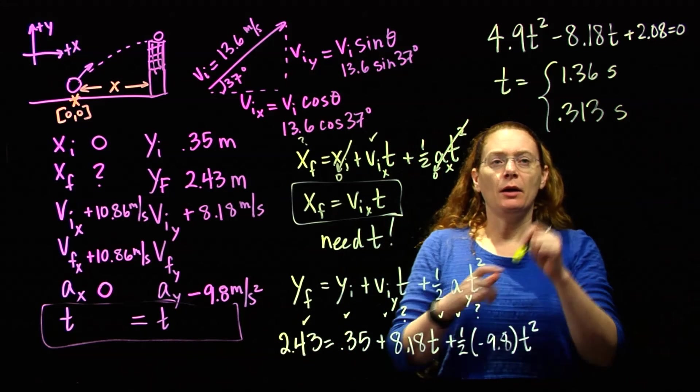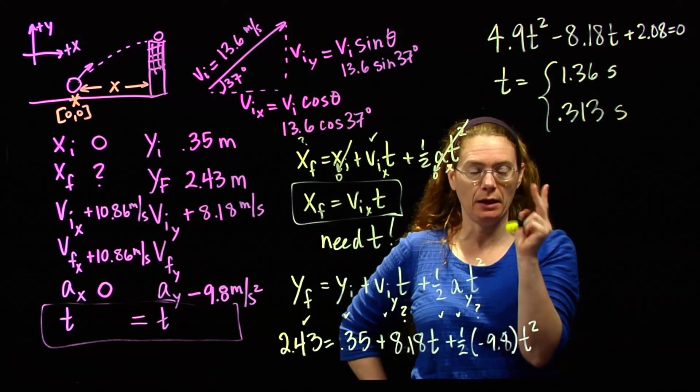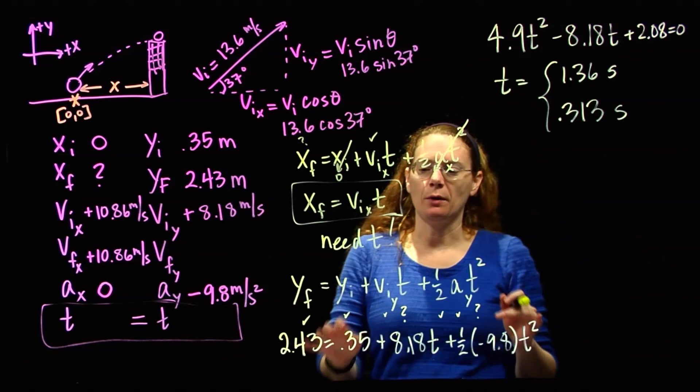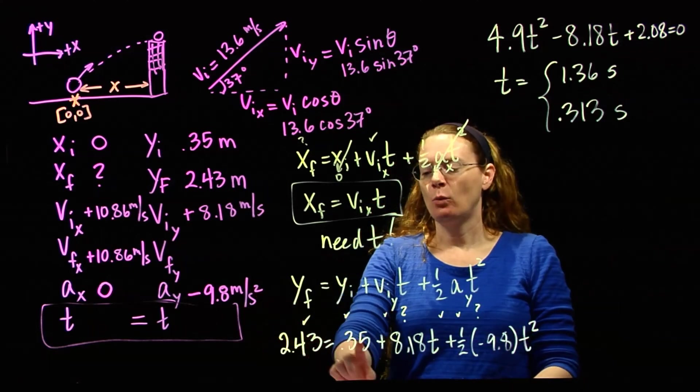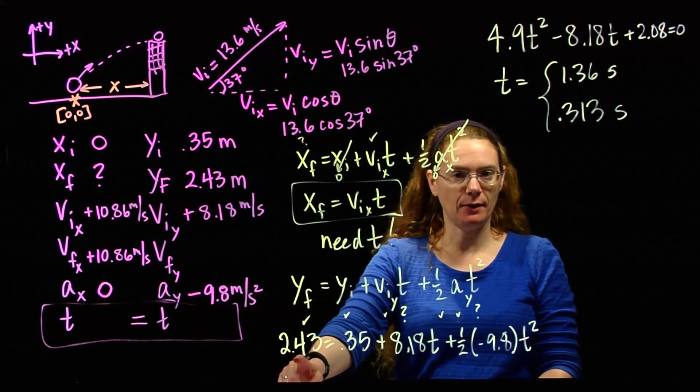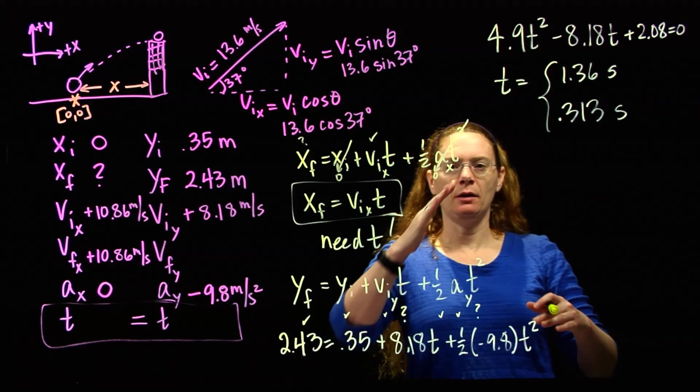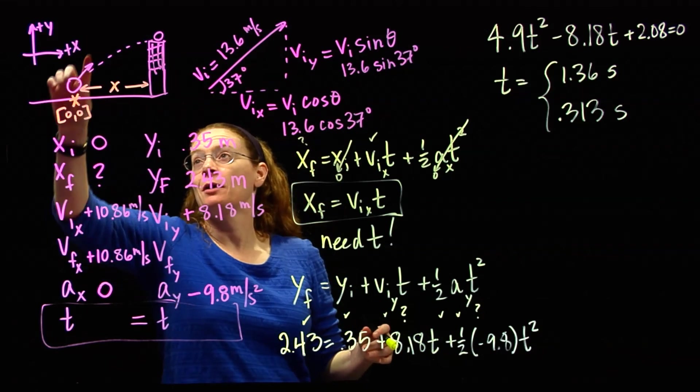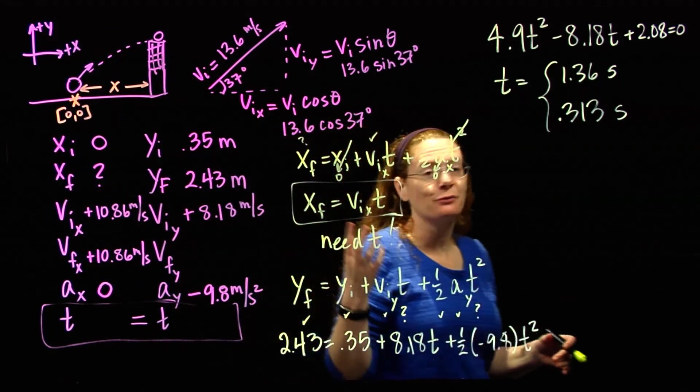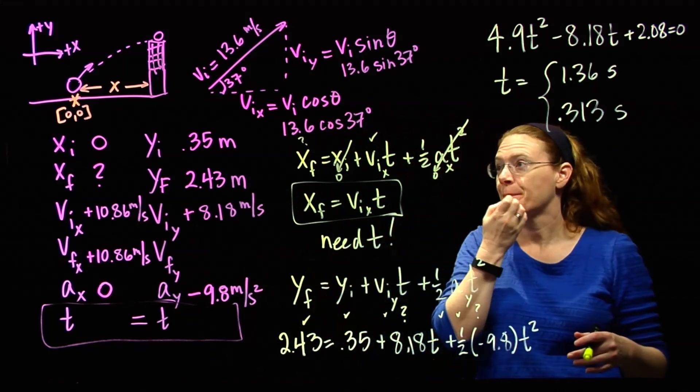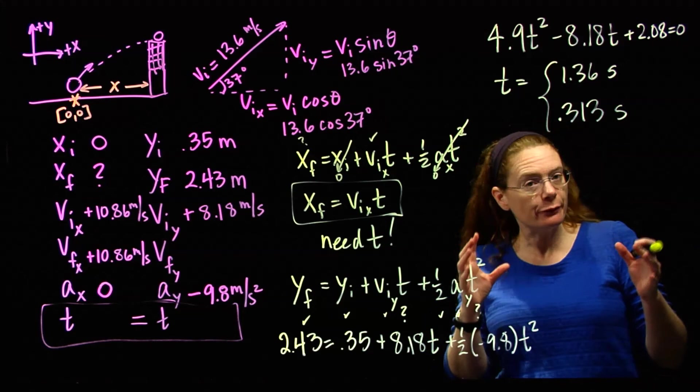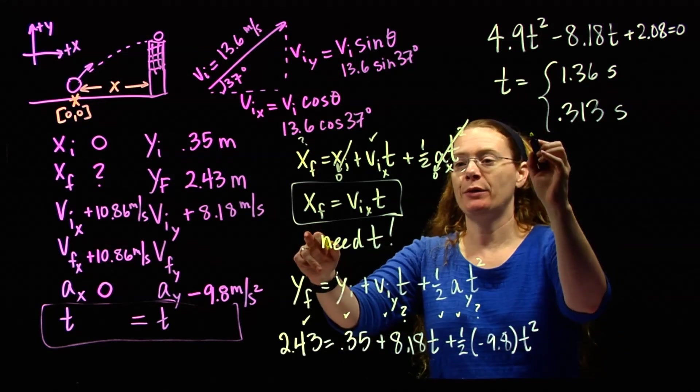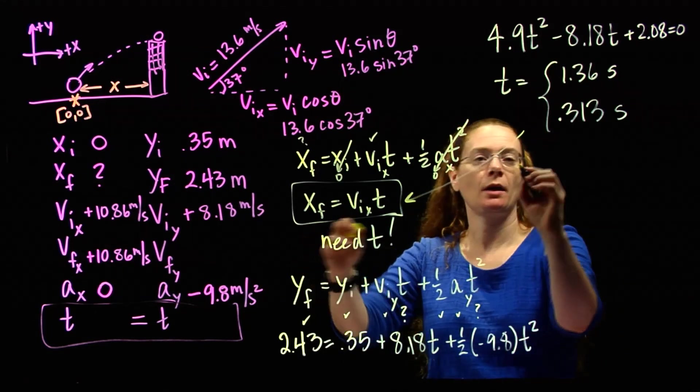Now they're both positive. So this means we have two potential correct answers. Why would that be? Let's go back and think physically about what we're solving for. We're figuring out the time when it starts at this height and ends at this height. If you think about it, the volleyball is launched here. It's got to reach that 2.43 meters once on the way up and then once on the way down. So two correct, physically meaningful times.